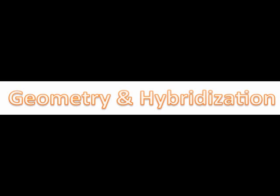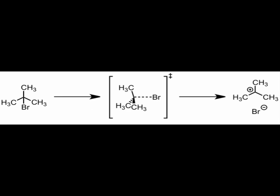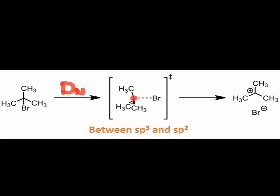Many elementary steps involve geometry and hybridization changes at one or more atoms. In these cases, we think of the transition state hybridization as intermediate between the hybridization of the reactants and that of the products. For instance, in the transition state for the first step of SN1 substitution, we depict the electrophilic carbon atom as partially but not completely flattened. This suggests a hybridization state between sp3 and sp2.